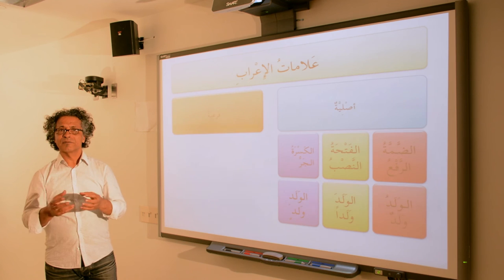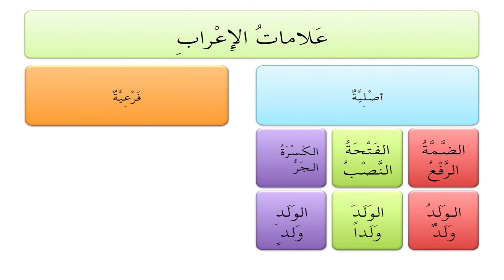Now let's talk about the markings — علامات الإعراب. There are two types: أصلية meaning original, and فرعية which means secondary. The أصلية are as we saw in many examples: الضمة — if you see الضمة it's الرفع, whether it's definite الولدُ or indefinite وَلَدٌ, it is marking الرفع. الفتحة هي للنصب — so النصب is الولدَ or وَلَدًا. Notice there's an extra alif added to mark the ending. الكسرة هي علامة الجر — فالجر نراه في الولدِ or وَلَدٍ. So these three vowels are the main original markers: العلامات الأصلية للإعراب.